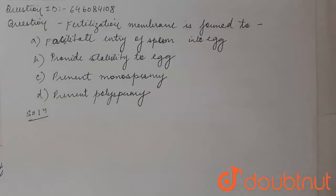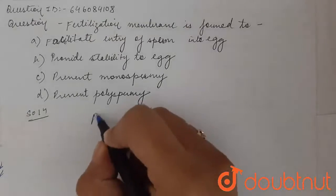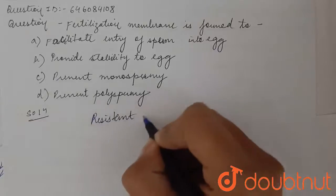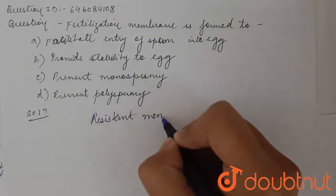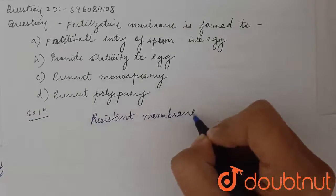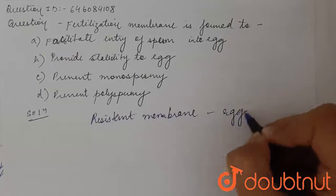Hello students, we have a question: fertilization membrane is formed to — a) facilitate entry of sperm into egg, b) provide stability to egg, c) prevent monospermia, or d) prevent polyspermia. The fertilization membrane is the resistant membrane layer of the egg of many animals.